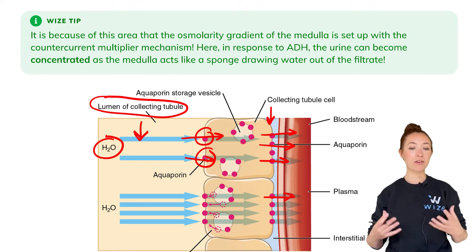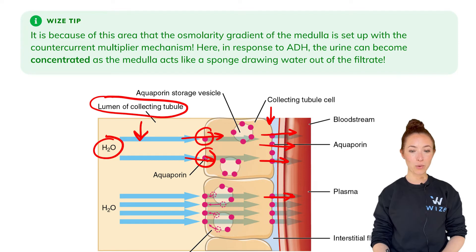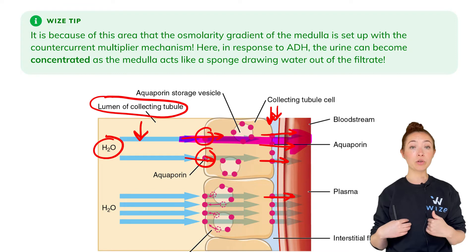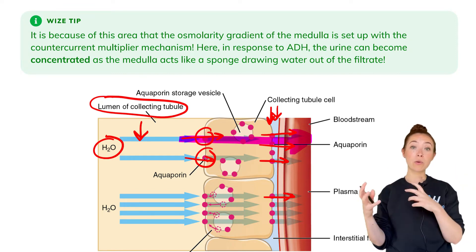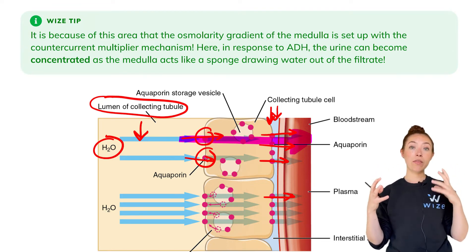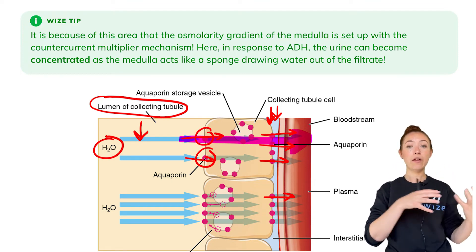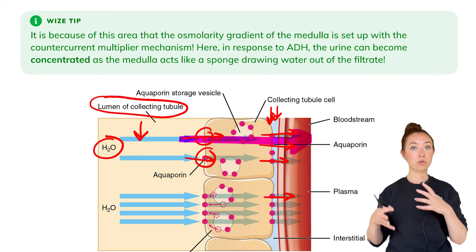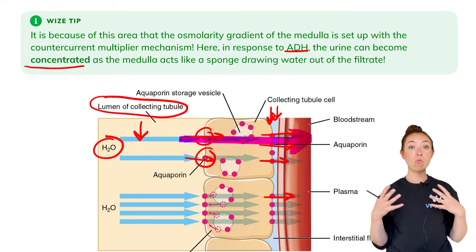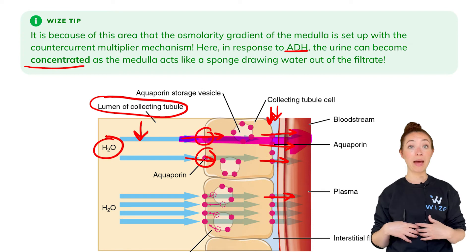This image may not be very telling, because it seems like the water is just going directly from the filtrate into the circulation — but recall that there is an interstitium here. The collecting ducts are partly in the medulla, and what actually draws water from the filtrate is the medulla. The medulla has to have a high osmolarity so that water will flow by osmosis from a low osmolarity area to a high osmolarity area, and then it can be put into circulation. This is why we have the countercurrent multiplier mechanism, and because in response to ADH the urine can be concentrated, the medulla really acts as the sponge that draws water from the filtrate so we can reabsorb it back into our blood.